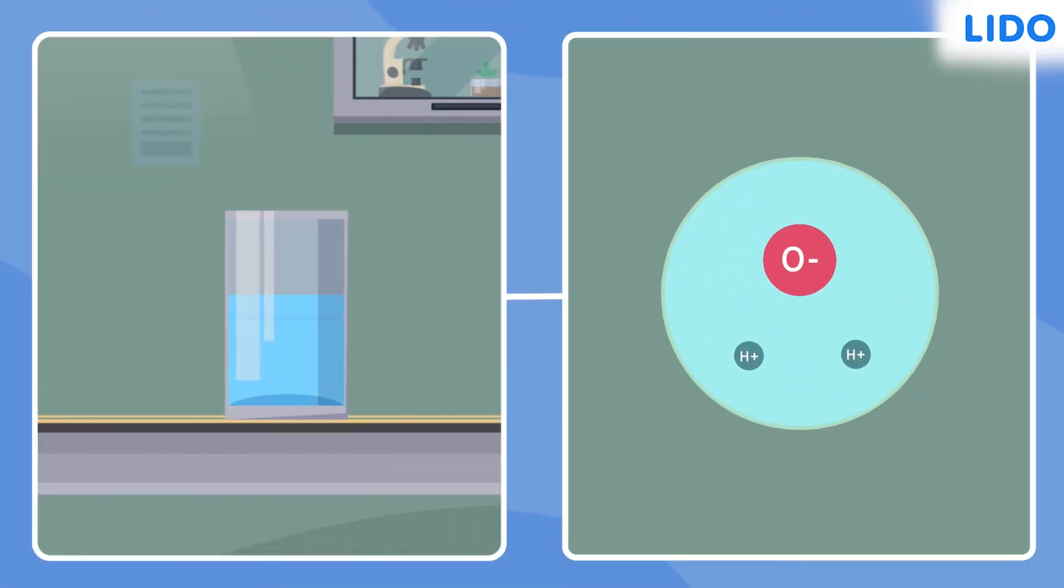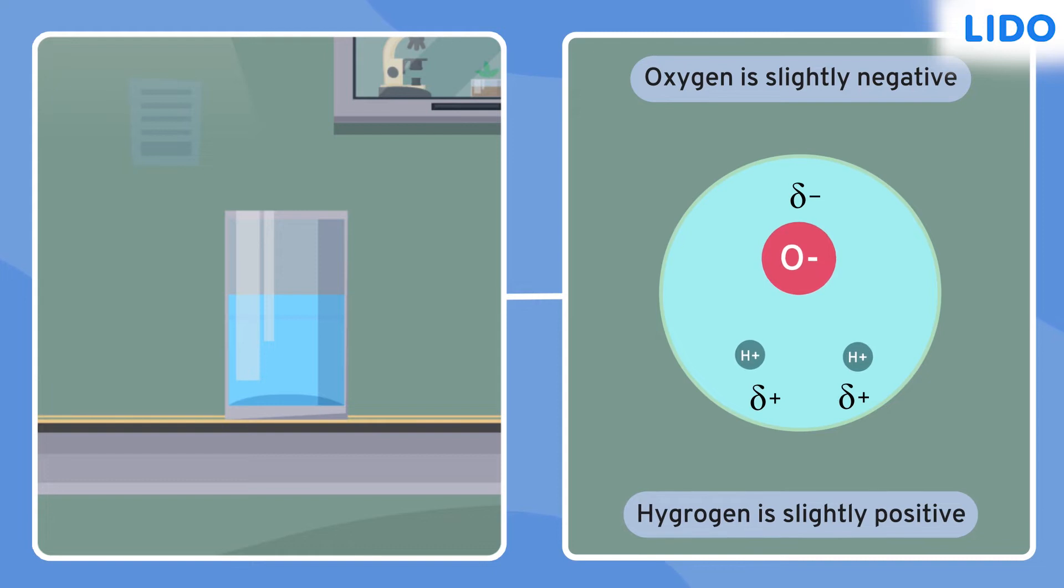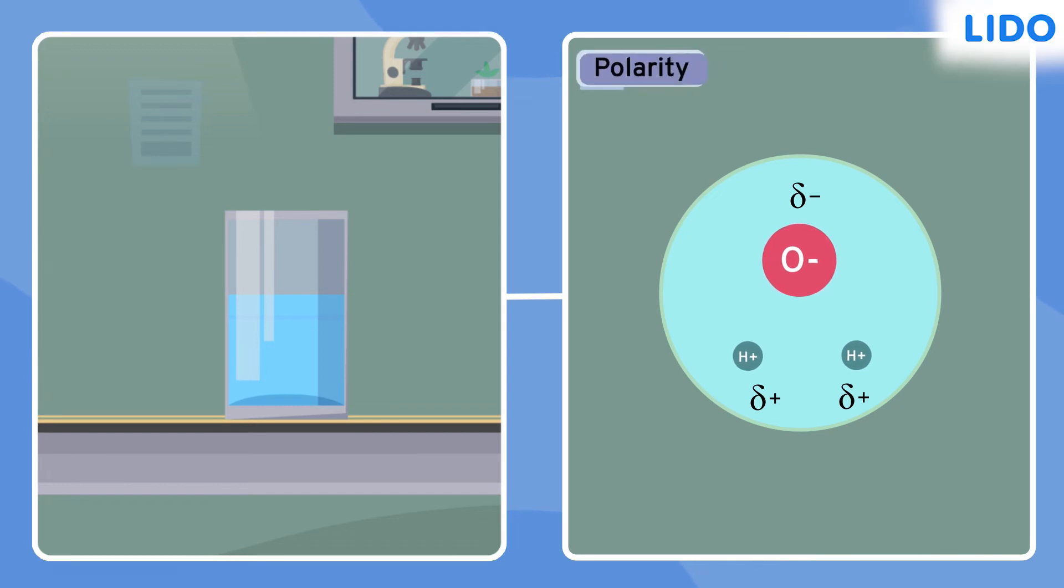We know that water is a compound and every water molecule is made up of two hydrogen atoms and one oxygen atom. This oxygen atom carries a slight negative charge, while the hydrogen atoms carry slightly positive charges. This creates two poles in the molecule which leads to polarity and this makes water a polar solvent.